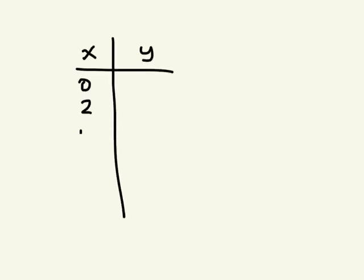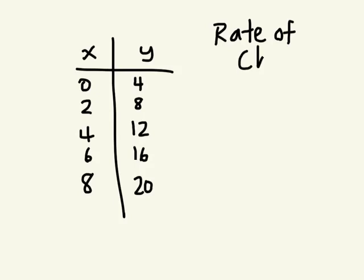Let's say we have 0, 2, 4, 6, 8, and I have 4, 8, 12, 16, 20. And if I ask you now, what's the rate of change?